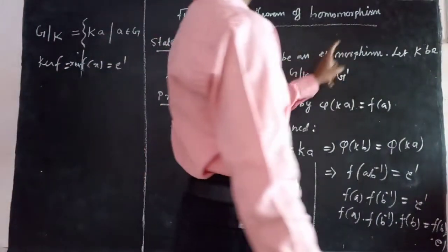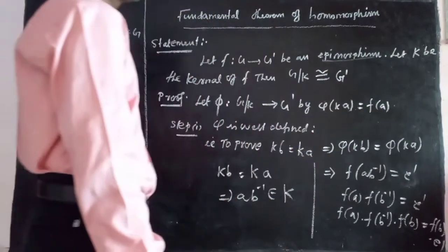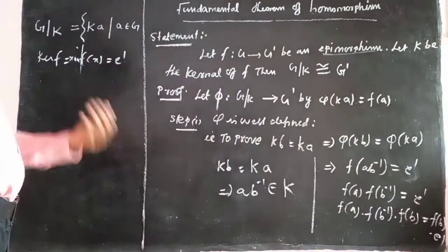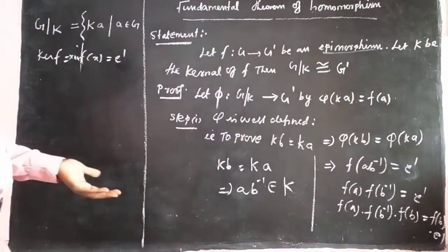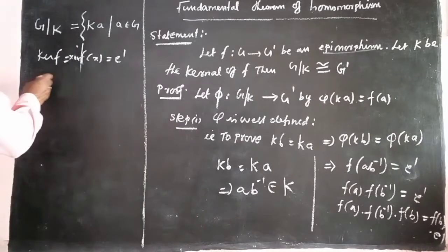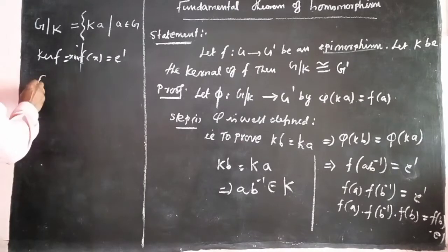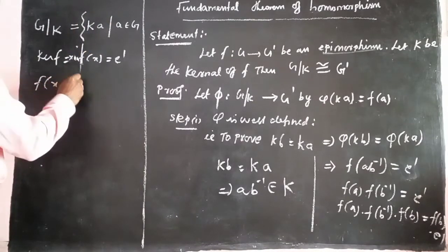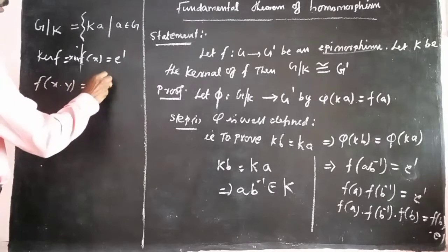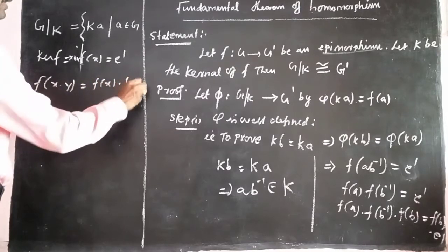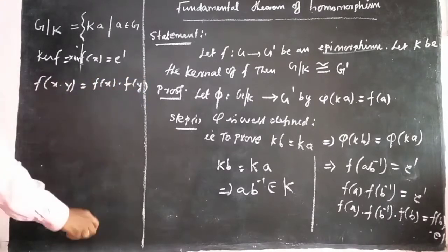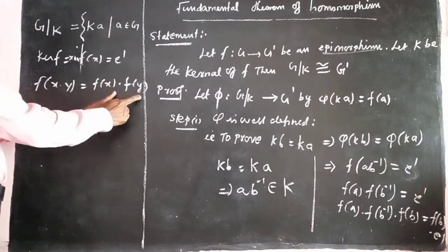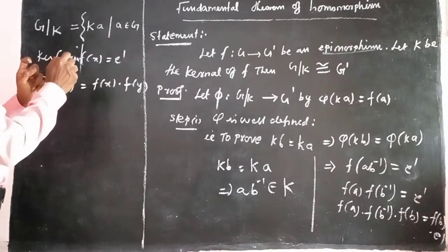Epimorphism means it is a homomorphism. Homomorphism means: F of x dot y is equal to F of x times F of y. That is, F(x·y) = F(x)·F(y).